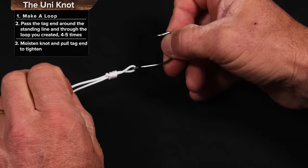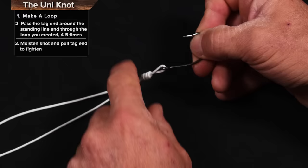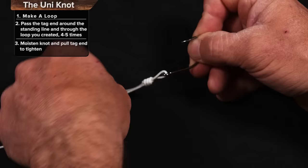So now that is a Uni straight to the hook. A lot of times this will slide down. You can tease it back up and make the loop bigger. The tighter you tighten this tag end, the more secure your loop is going to be. So that's the Uni to the hook.